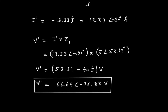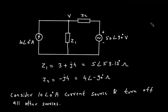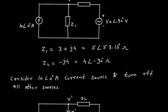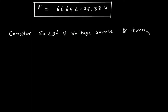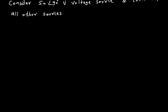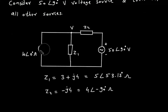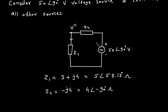Next, we consider the voltage source 50 at an angle of 90 degrees Volt and turn off all other sources. If we turn off the current source, it will be open circuited. Let's say this is I double prime, and according to the polarity of the voltage source, the current flows in that direction.